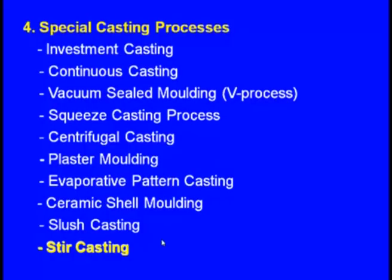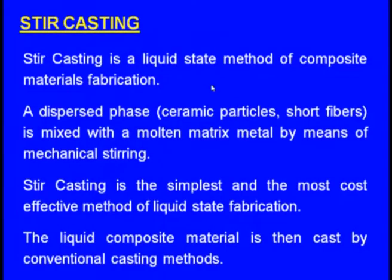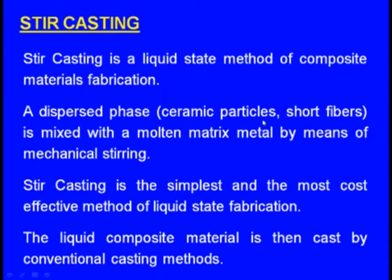Finally, we will see stir casting. This stir casting has been developed very recently and offers comparatively more advantages. Stir casting is a liquid state method of composite materials fabrication. Composites means metal mixed with ceramic, which offers better properties than common alloys and metals. Ceramic particles or short fibers — the dispersed phase — are mixed with the molten metal matrix by means of mechanical stirring. Stir casting is the simplest and most cost-effective method of liquid state fabrication. The liquid composite material is then cast by conventional casting methods.